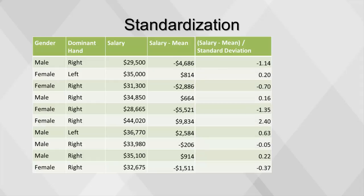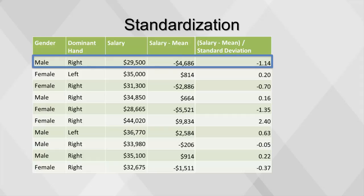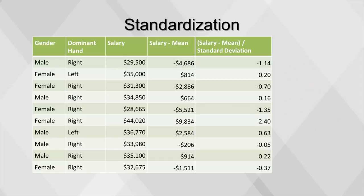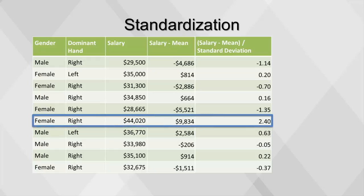For example, in the first row of our data set, since we've already calculated the salary minus mean column, all we need to do is divide by 4,103 to get the result of negative 1.14. This value can be interpreted as: the value of $29,500 is 1.14 standard deviations lower than the mean. Looking at the rest of the values, we see that the largest salary, $44,020, is actually very far away from the mean — this must be a high-performing bank teller. We can use this standardized value to compare the high-performing bank teller to the high performer of another profession.